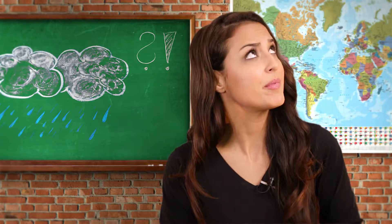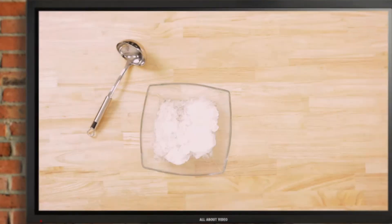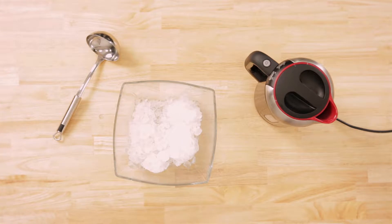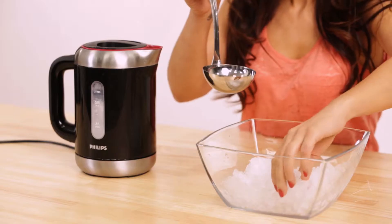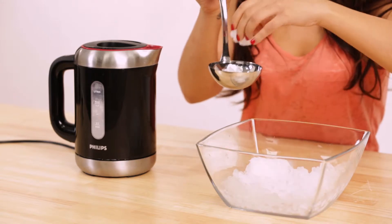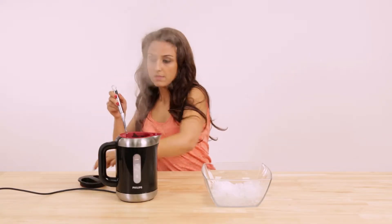I'll show you in a little experiment. For this you need a ladle, ice cubes, and a kettle. But please do this only with your mom or dad because of the boiling water. Put a piece of ice into the ladle and hold the ladle over the steaming kettle.